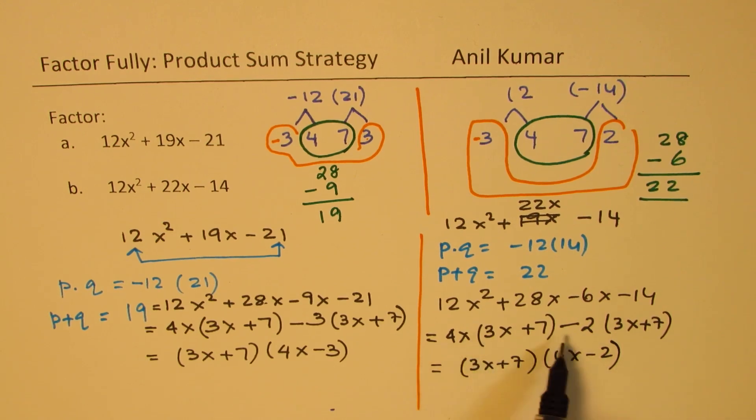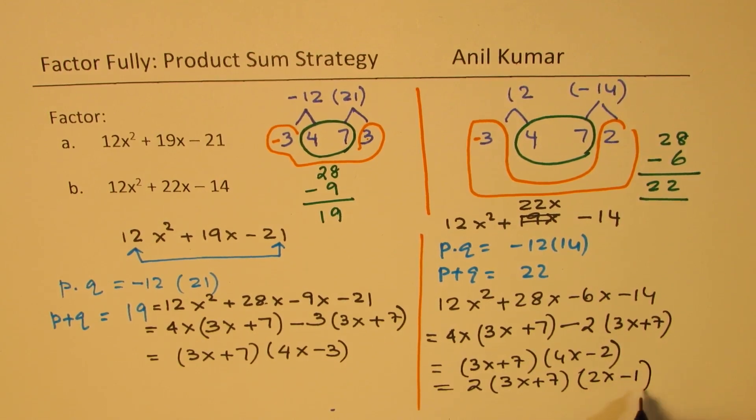Now 3x + 7 is common, and we have 4x - 2. Now within 4x - 2, I could take 2 common. So I could write 2 times (3x + 7) times (2x - 1) as fully factored form.